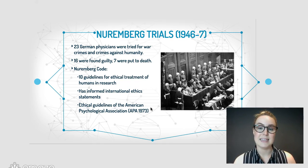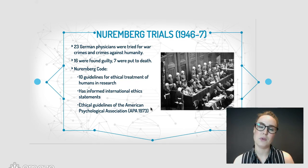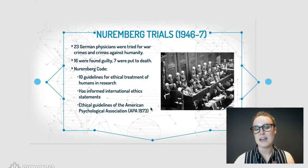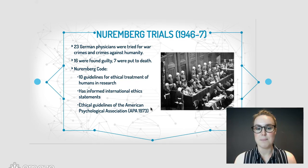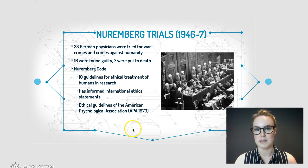This then led to the Nuremberg Code, which was a list of guidelines that outlined the ethical treatment of humans in any kind of research. This in turn informed lots of different guidelines, and most importantly for us, the American Psychological Association ethics guidelines, which are really going to inform what we're going to talk about now.